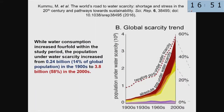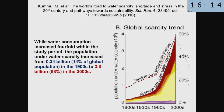Droughts. A recent paper by Kummu et al. showed that the increase of people living under water scarcity is much stronger than the increase of water consumption. In the beginning of the 20th century, there were just 240 million people, or 14% of the global population, living under water scarcity. In the first decades of the 21st century, it is 3.8 billion, which is 58%. Water scarcity is defined here as 1,700 cubic meters per capita per year.